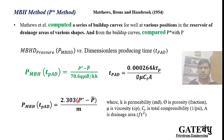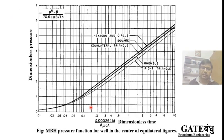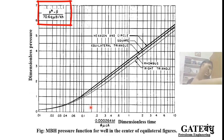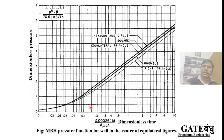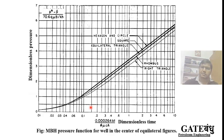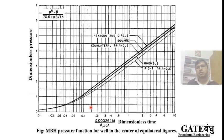If we know P_MBH and we know p-star, we can calculate back the p-bar — the average static drainage area pressure. This MBH approach generates a series of curves between dimensionless T_pD and P_MBH for different reservoir shapes, such as rhombus, right triangle, equilateral triangle, square, hexagon, and circle. When we choose a particular curve, we need a confident general guess about which kind of drainage area shape applies.